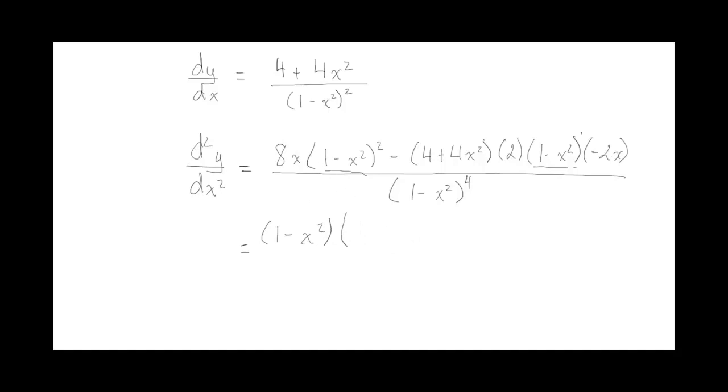So what I've got is 8x times 1 minus x squared minus, actually I'm going to go with plus because there's a negative and a negative, so that makes it plus. 2 times 2 is 4, and then I have an x, and then I have 4 plus 4x squared. And notice this term here I don't have because I've common factored it out.